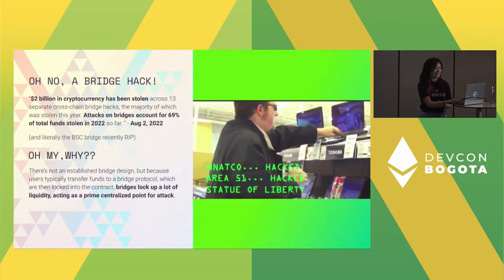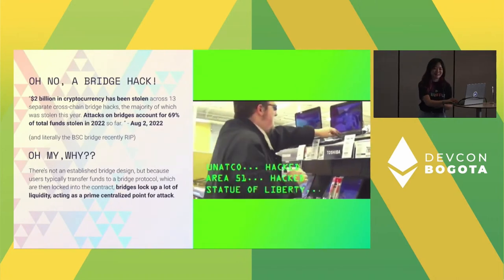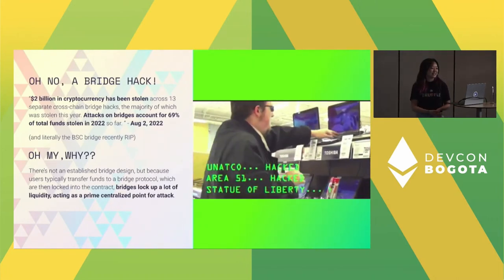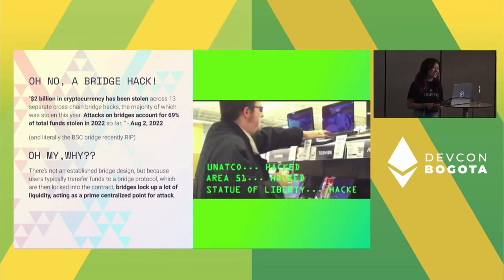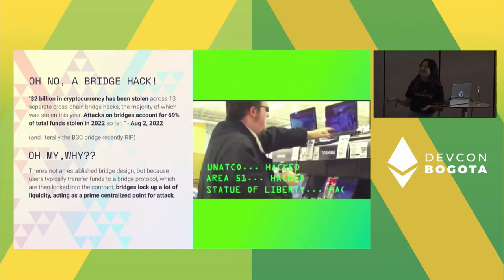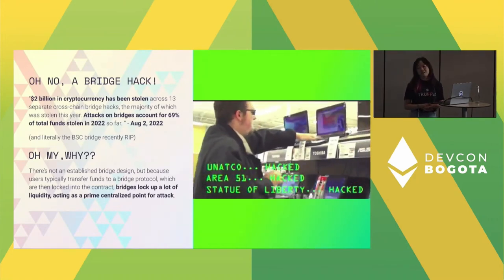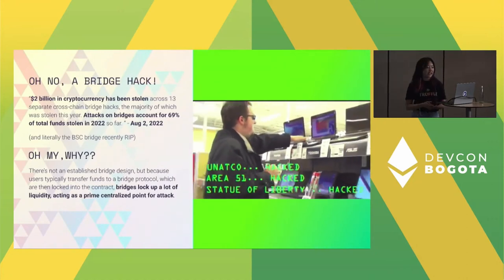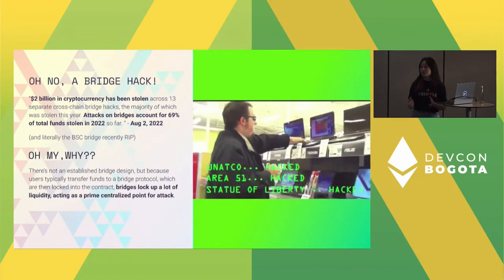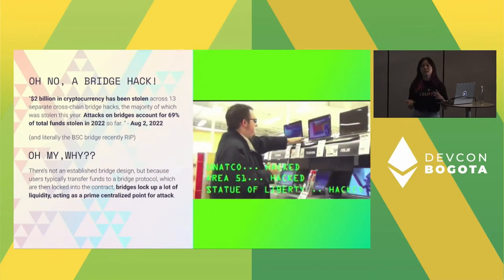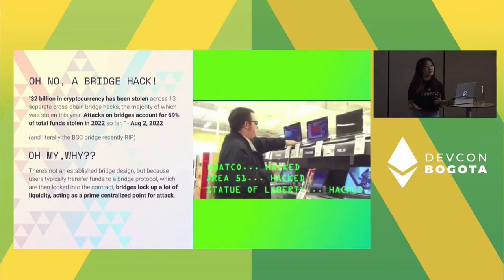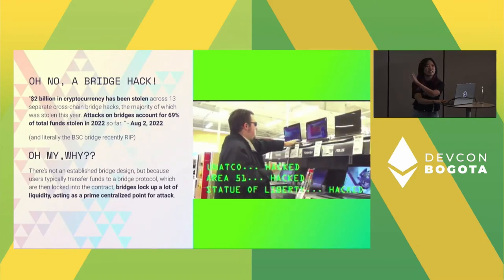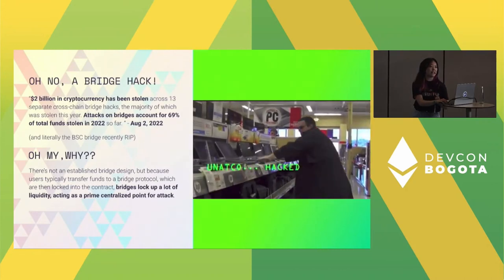Bridge hacks happen all the time. As of August 2022, there was a study done — 69% of attacks have been on bridge hacks. Very recently, right before I was creating this presentation, the BSC bridge was hacked. Why does this happen? As I mentioned, bridges typically lock up liquidity, and that is a prime centralized location for bridge hacks. Something people might think about when creating bridges is the idea of decentralized bridges. Centralization is a big part of why bridge hacks are so intense.